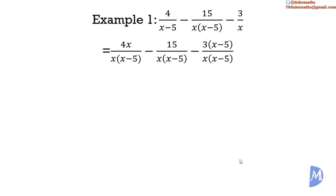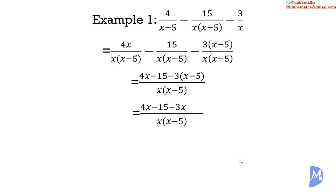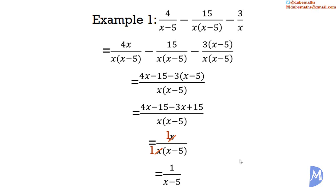We add and subtract accordingly, and we expand the brackets. Minus 3 multiplied by x gives minus 3x, and minus 3 multiplied by minus 5 gives positive 15 — remember the distributive law. Then we add like terms: 4x subtract 3x equals x, and negative 15 plus positive 15 equals 0. So we get x over x(x minus 5), and the x's cancel to leave 1 over (x minus 5).